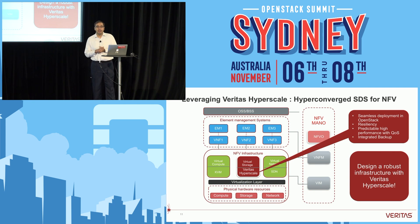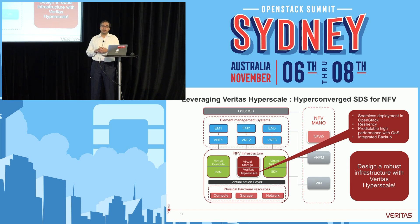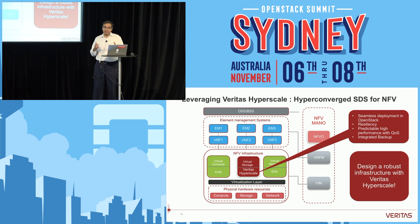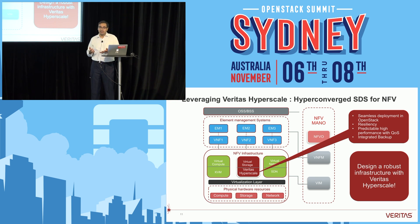NFV — network function virtualization — is gaining ground. Network functions that previously required expensive switches or networking equipment can now be realized in software. NFV workloads run inside OpenStack-managed virtual machines, providing cost-effectiveness and automation. Hyperscale is very aptly suited for NFV workloads because NFV requirements such as low latency and predictable performance with quality of service can easily be met by what Hyperscale provides, enabling a robust NFV infrastructure.